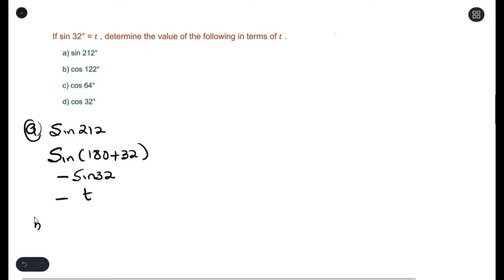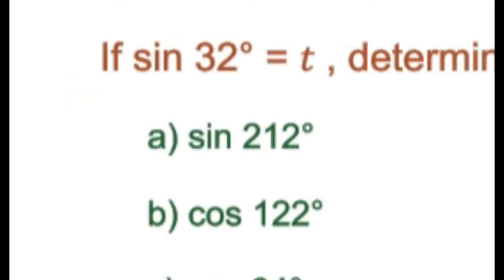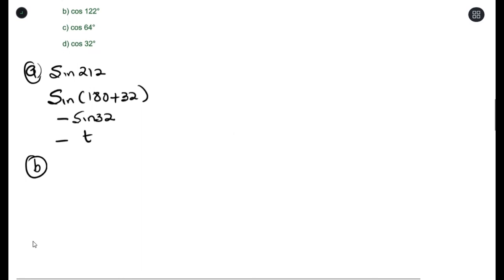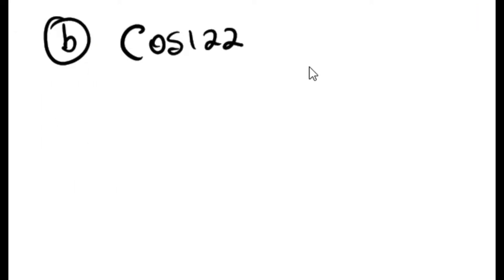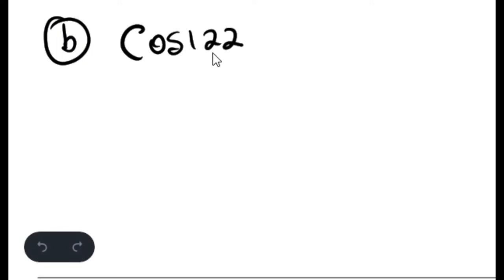For part b, cos 122°. To simplify cos 122° we can use reduction formula or co-ratios. I noticed that cos 122° can be rewritten as 90° + 32°.